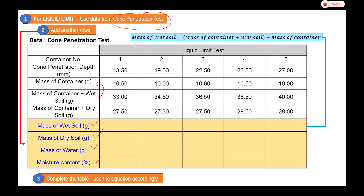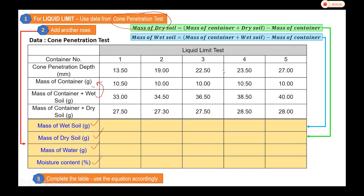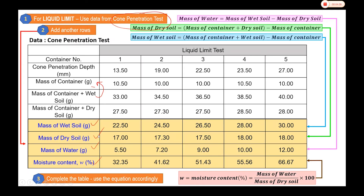Similarly, to get the mass of dry soil, we deduct the container mass from the mass of container plus dry soil. For the mass of water, it is simply the mass of wet soil minus the mass of dry soil. Finally, the moisture content is the mass of water divided by the mass of dry soil, multiplied by 100 to express it as a percentage. This is how we get the calculated data for each container.